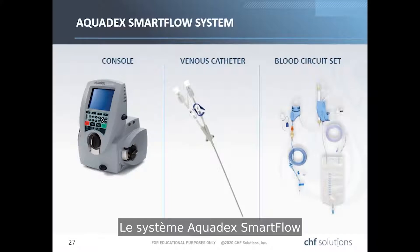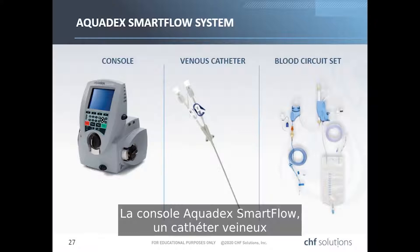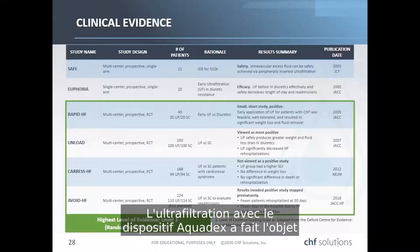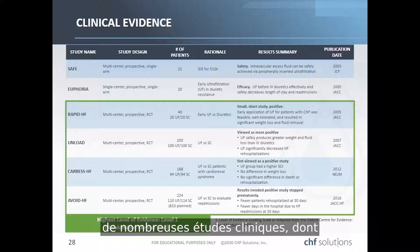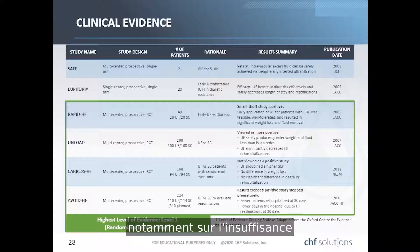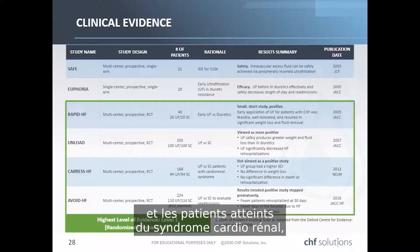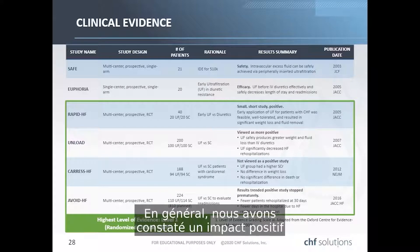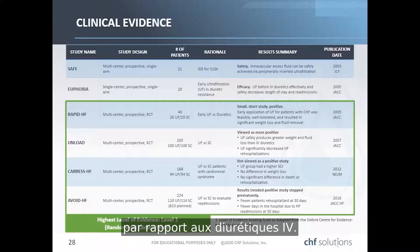The Aquadex SmartFlow system comprises three components: the Aquadex SmartFlow console, a venous catheter, and the blood circuit set. Ultrafiltration with the Aquadex device has been the subject of many clinical studies, including four randomized clinical trials—the highest level of evidence—looking at congestive heart failure and cardiorenal syndrome patients. Generally, studies have shown a positive impact on heart failure rehospitalizations and greater weight loss and fluid loss compared with IV diuretics.